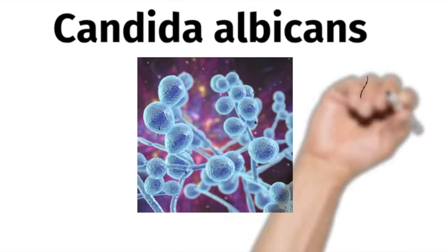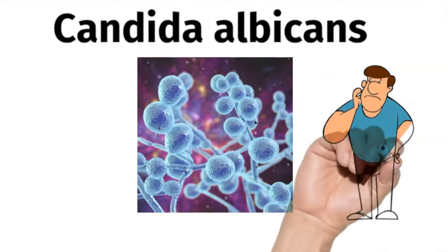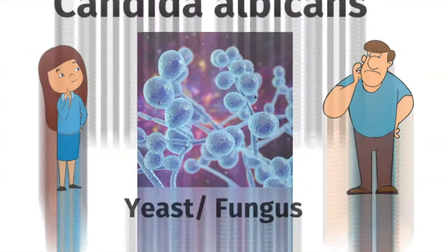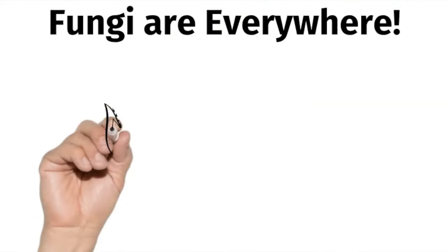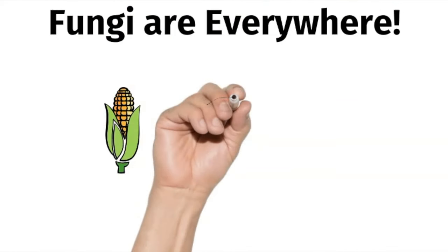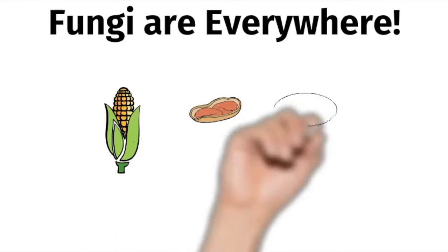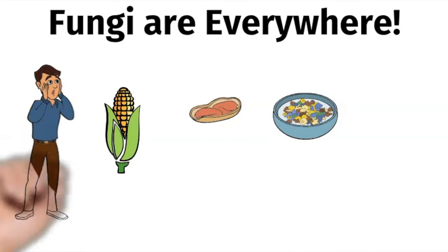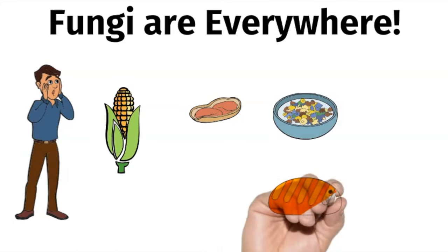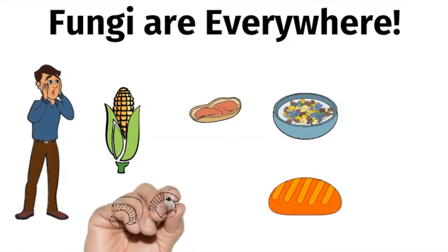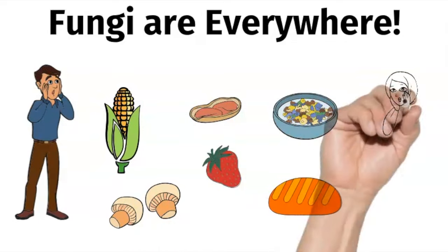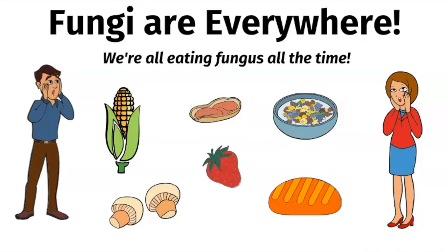How many of you have heard of Candida before? It stands for Candida albicans, which is a type of yeast or fungus. Yeast and fungi are actually everywhere, even on the food that we're eating. A lot of food has microscopic amounts of yeast, like corn, peanuts, cereals. Breads contain brewer's or baker's yeast, and mushrooms are a type of edible fungus. Even fruits like berries could have microscopic amounts of fungus. So the truth is, we're all eating fungus all the time.